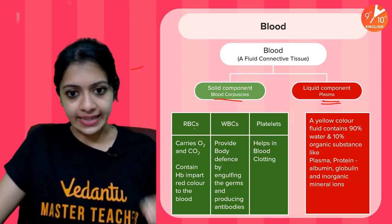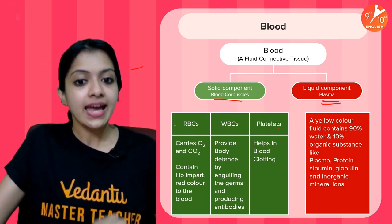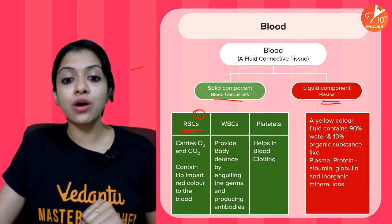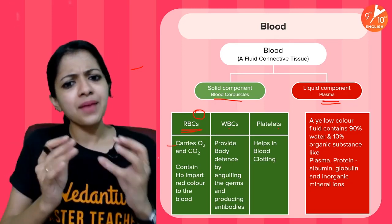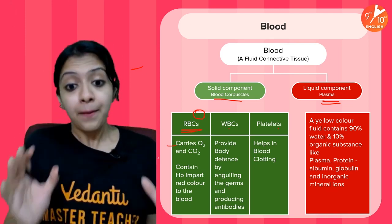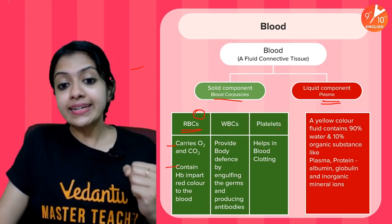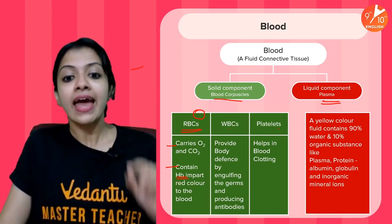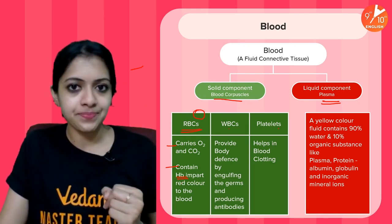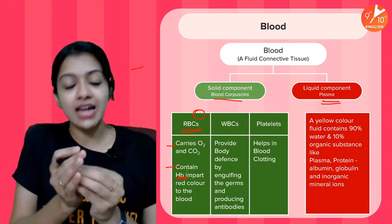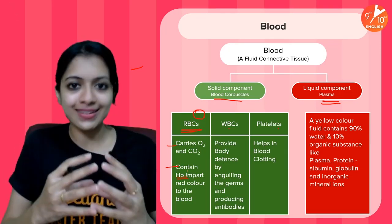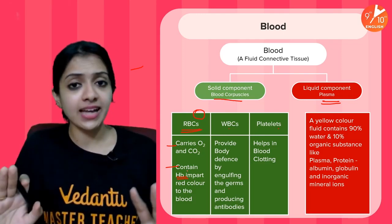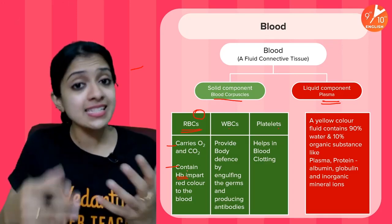Swimming around in the plasma are the blood corpuscles, which are mainly red blood cells, white blood cells, and platelets. Red blood cells (RBCs) are red in color and circular in shape. Their main function is to carry the respiratory gases, oxygen and carbon dioxide. They contain the pigment called hemoglobin (Hb), which imparts the red color to our blood. Hemoglobin attached to oxygen gives blood its bright red color, whereas deoxygenated blood appears more bluish-red.